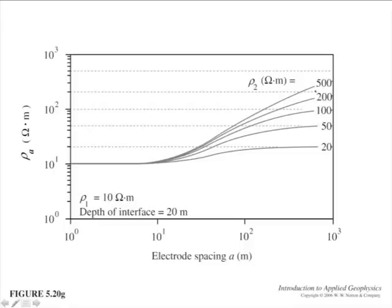Whereas if the resistivity below is 500 ohm meters — 50 times rho one — then you'll still be climbing even at 1,000 meters of A spacing, which is a lot of wire, and it still hasn't flattened out yet. This characteristic curve shows what happens when you change one of the properties. The gray lines indicate the value you should reach at much larger distances: 20, 50, 100, 200, and 500 ohm meters, the last of which we're not anywhere close to yet.